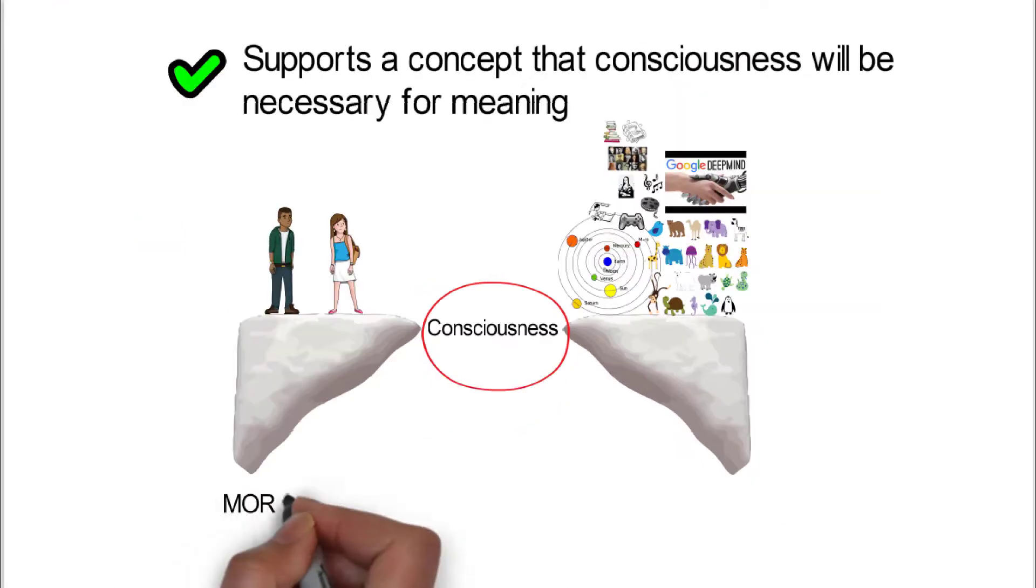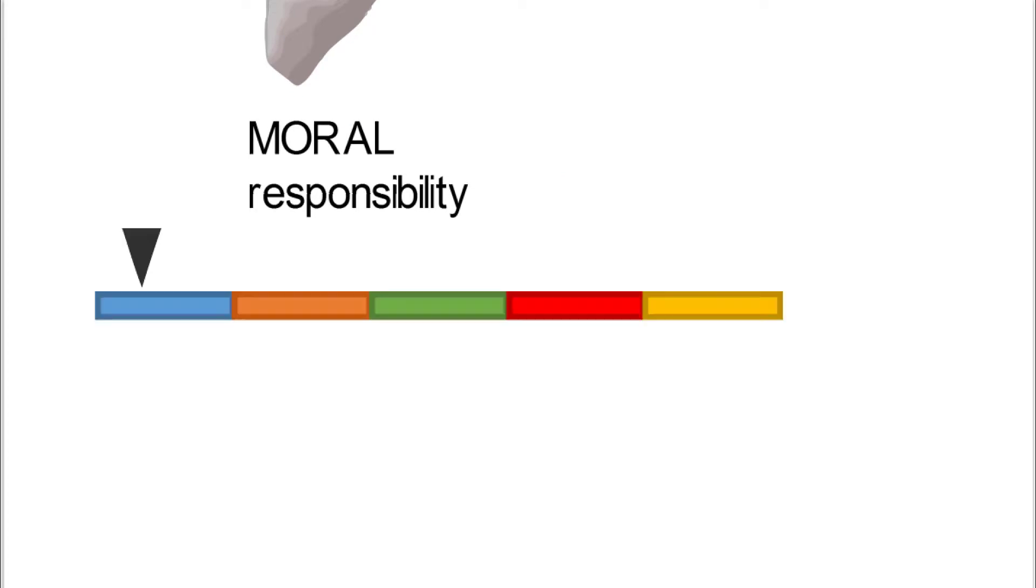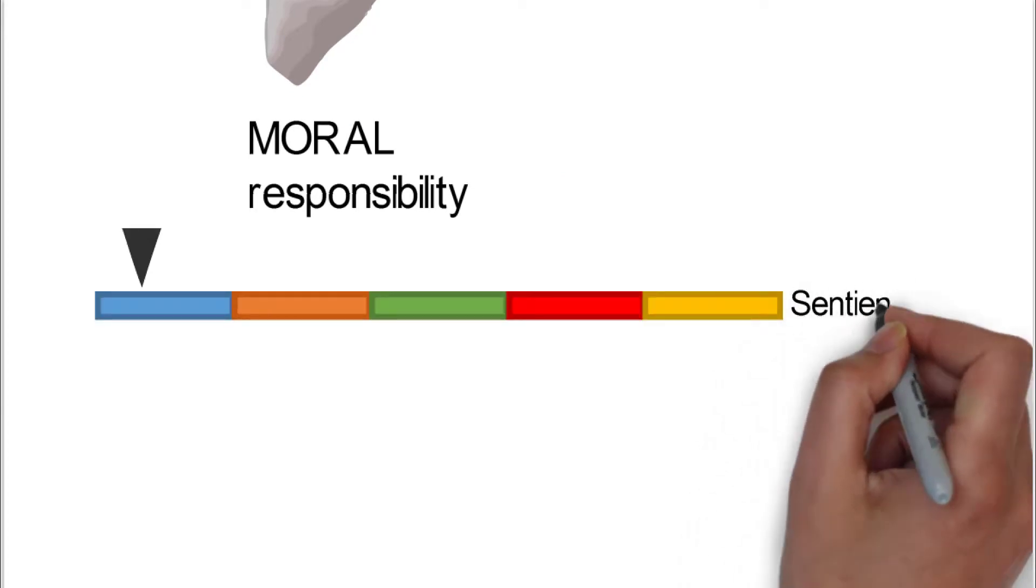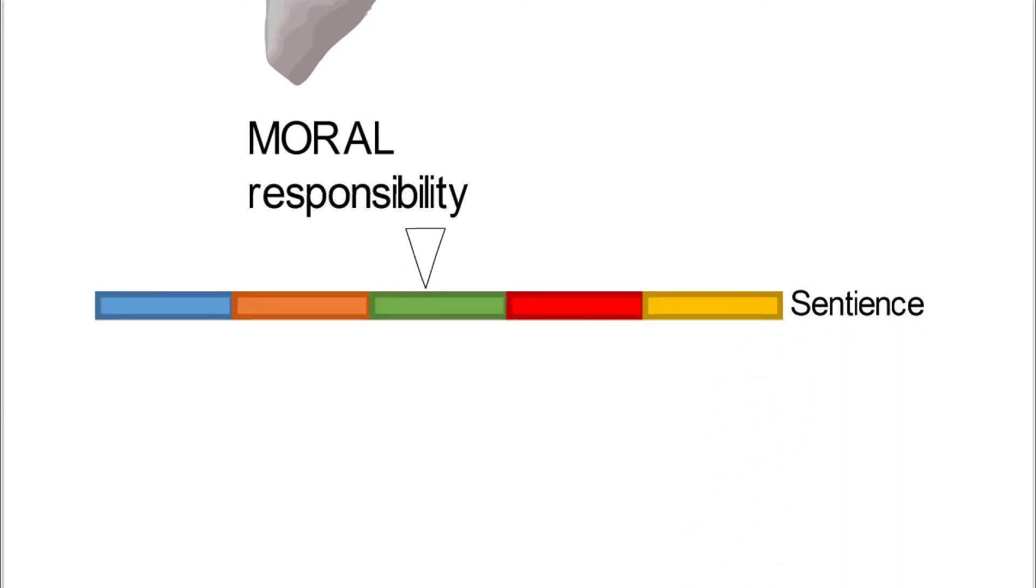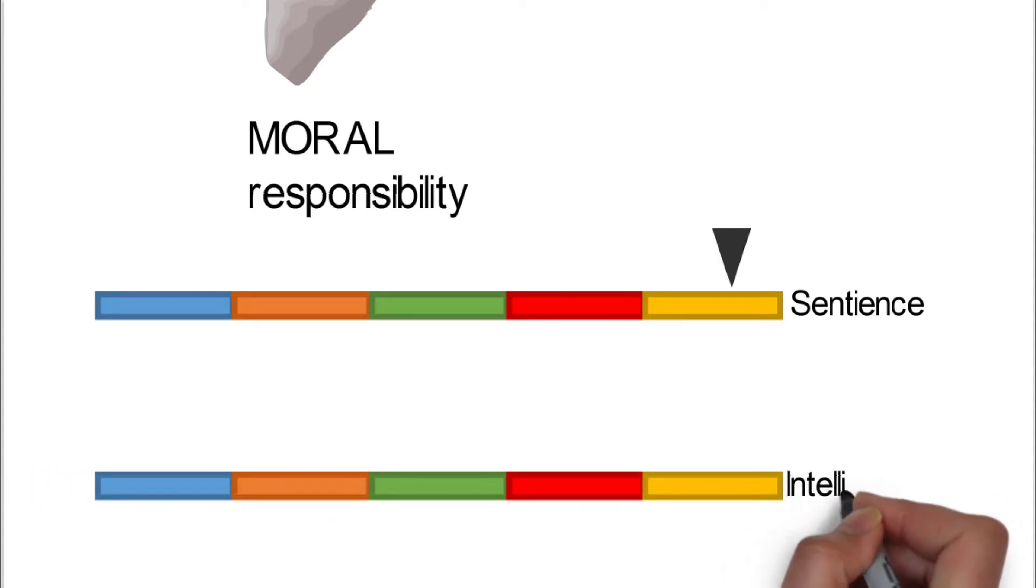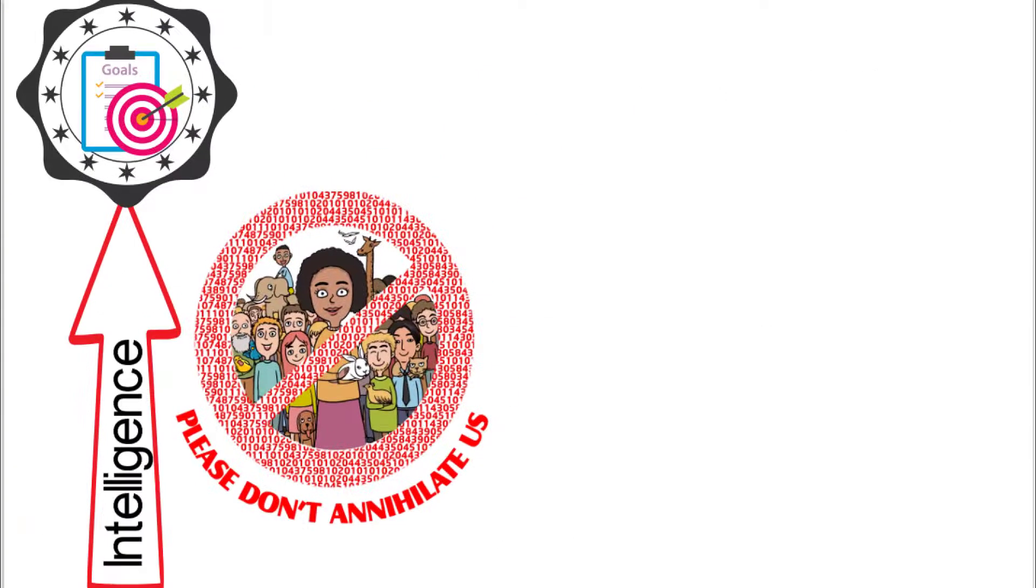Then he goes into the idea of moral responsibility with regards to consciousness. When he talks about moral responsibility, he talks about sentience. He says that moral responsibilities only apply to things as we can demonstrate that they are sentient. Whereas intelligence doesn't even get a tick on the moral responsibility field.